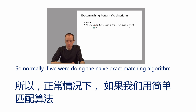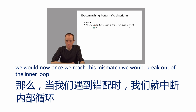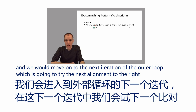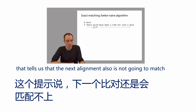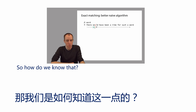Normally, if we were doing the naive exact matching algorithm, once we reach this mismatch we would break out of the inner loop and move on to the next iteration of the outer loop, which is going to try the next alignment to the right.